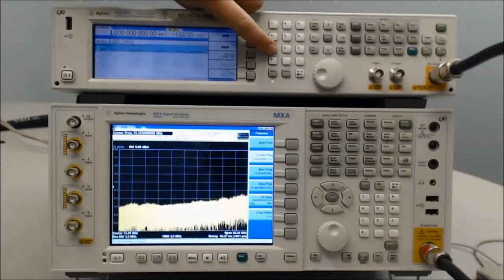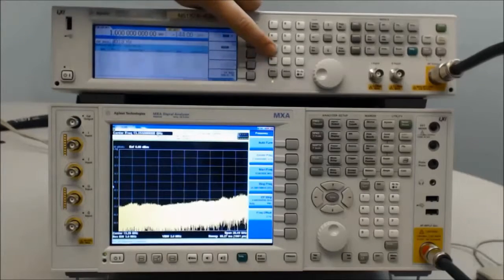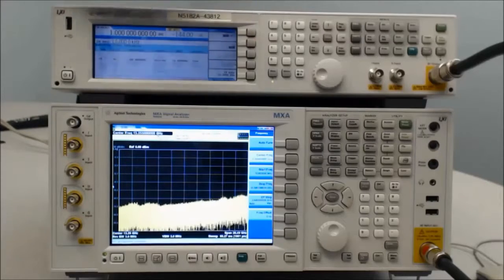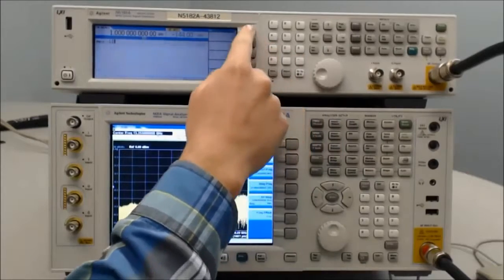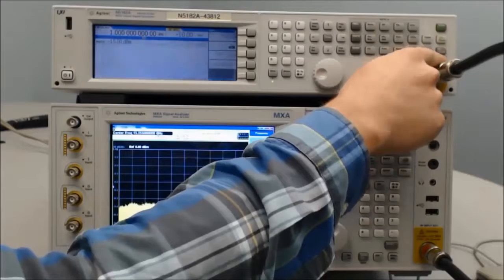From here, we can change the FM deviation to 100 kHz and change the FM rate to 10 kHz. Turn on the FM. We want to change the amplitude to minus 10 dBm. Ensure the modulation is on and the RF output is on.